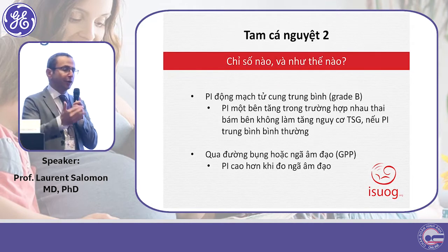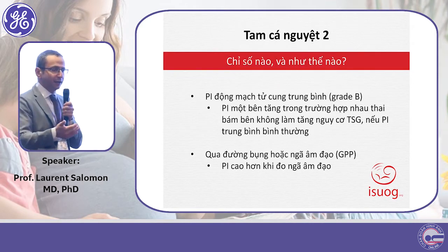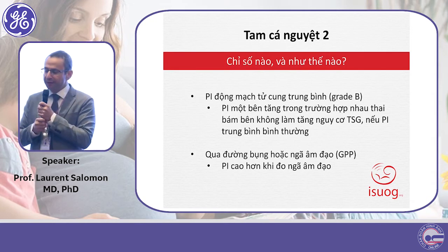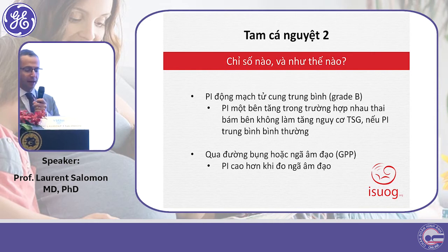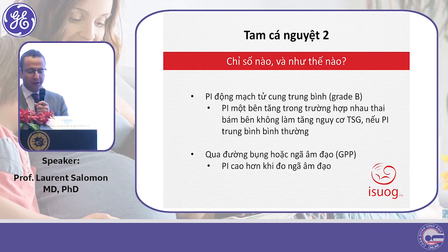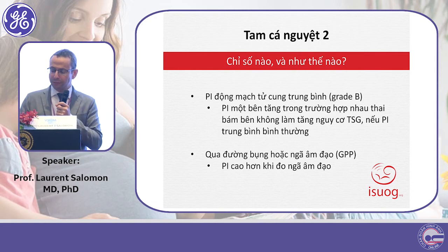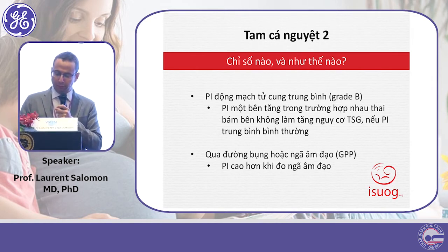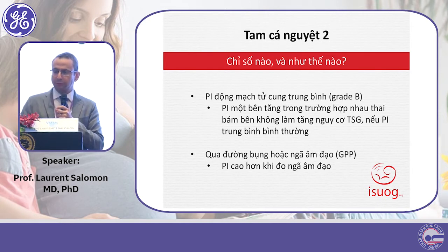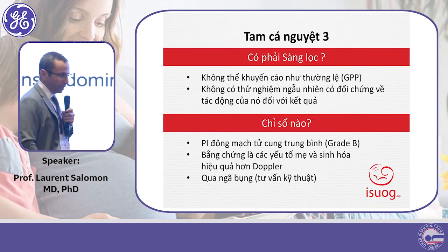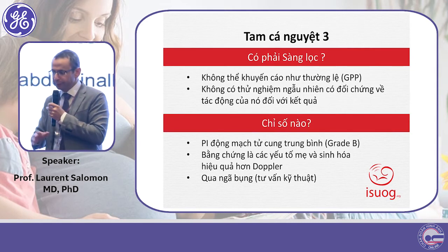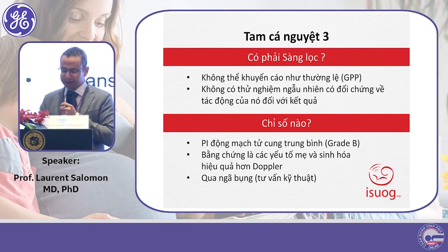In the second trimester it is probably too late to modify or improve the outcome. But if you were to do something, you should again rely on the uterine artery PI. In the third trimester, it is even less useful.